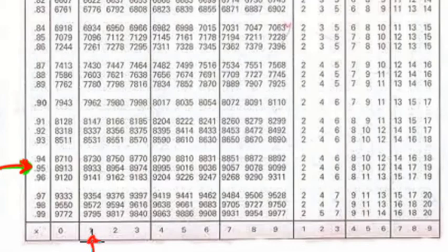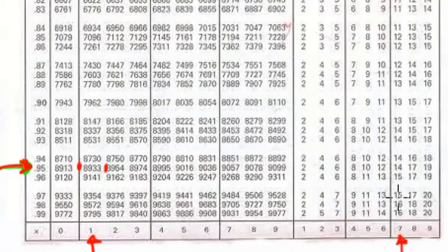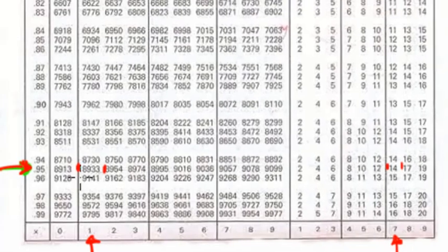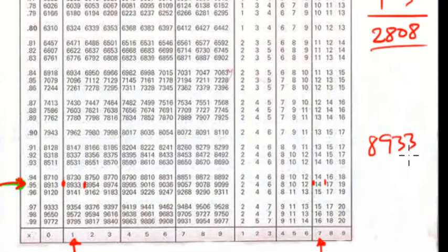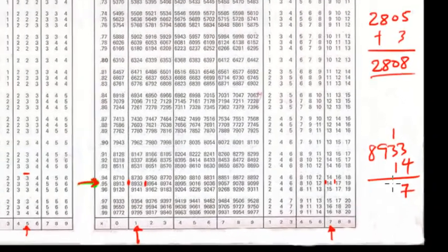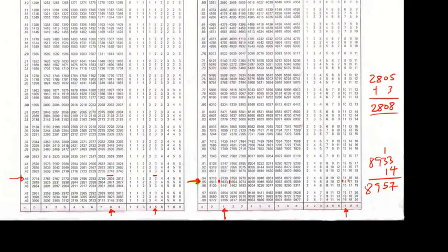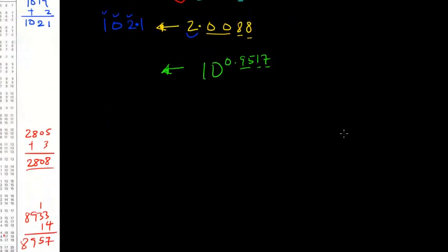Take 95 up and find the number. This is the number: 8, 9, 3, 3. Then 95 under 1, difference of 7 — we'll go to 7, take that up to the line 95. This is 14. So we'll add 8, 9, 3, 3 and 14. 4 plus 3 is 7, carry 1 up — this is 3, 4, 5. This gives us 8, 9, 5, 7. That's the final answer: 8, 9, 5, 7.